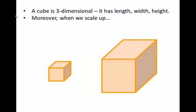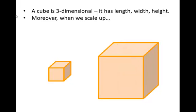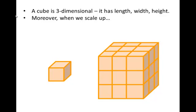What about a cube? It's a three dimensional object with length, width, and height. When we scale it up by a factor of 2, we get a grand total of eight pieces. If we scale it up by a factor of 3, we get 27 pieces. So when we scale up a cube by s, we get s cubed copies. To summarize: a one dimensional object scaled by s gets s copies; a two dimensional object scaled by s gets s squared copies; and a three dimensional object scaled by s gets s cubed copies.